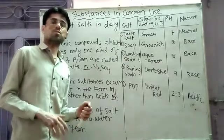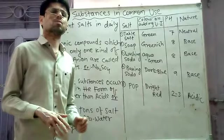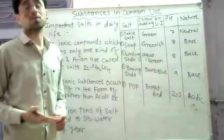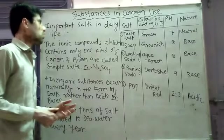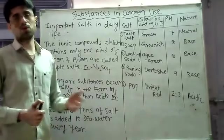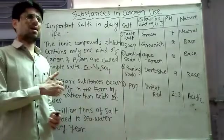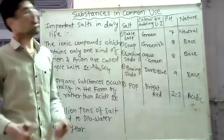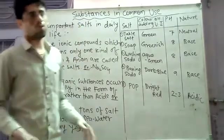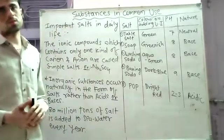In our day-to-day life we use various substances. These substances sometimes they are acidic, sometimes they are bases, sometimes they are metals, sometimes they are non-metals, and sometimes they may be salts also. We can classify these substances into different types, and in this chapter we are going to focus on these different types of substances.